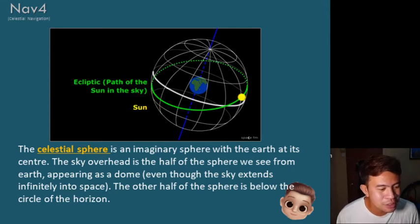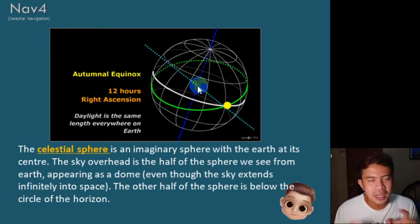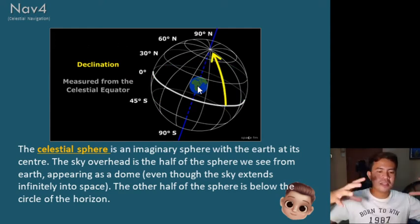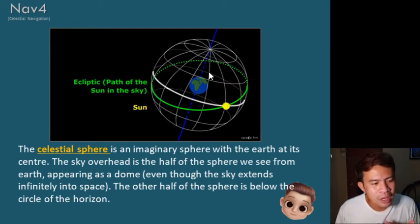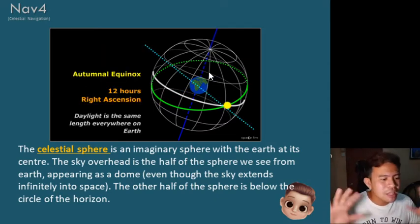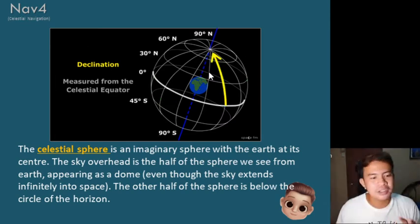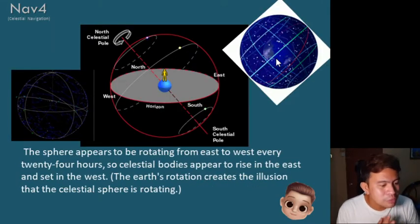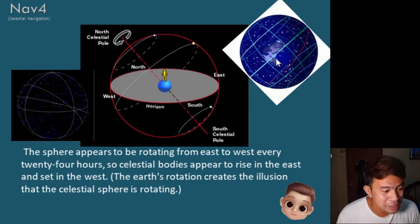The other half of the sphere is below the circle of the horizon. As you can see in the illustration, the Earth is below the circle. All the stars — whether far or near — are placed on the celestial sphere surrounding our Earth. The sphere appears to be rotating from east to west every 24 hours, so celestial bodies appear to rise in the east and set in the west.